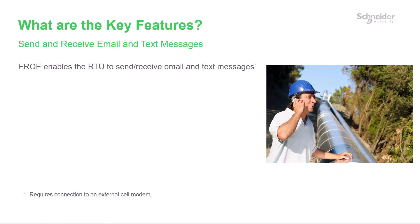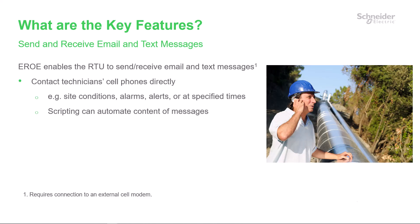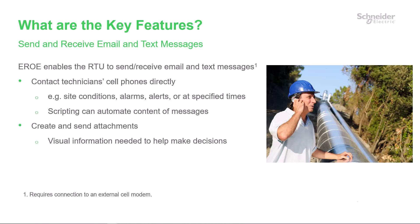With the inclusion of an external cell modem, Aero enables your RTU to send and receive both email and text messages. This can be useful to contact the maintenance technician's cell phone directly to inform them about site conditions, including alarms and alerts. This can take place at specified times if desired. The use of scripting can automate the content of the messages, and the RTU can also create and send attachments, providing the visual information you need to help make decisions.